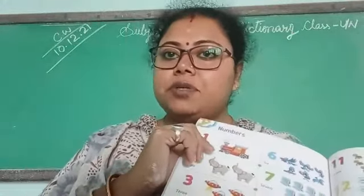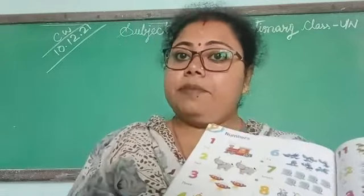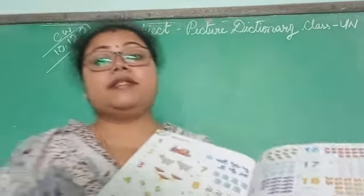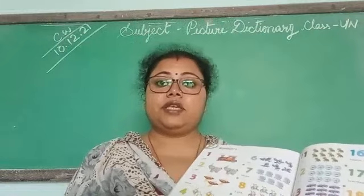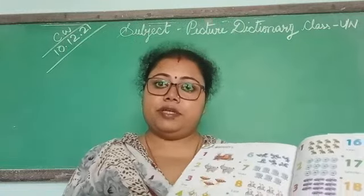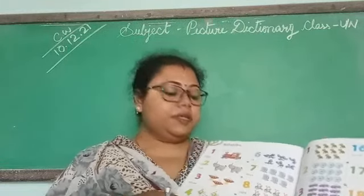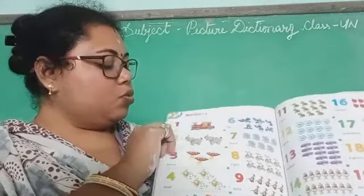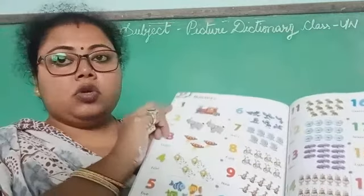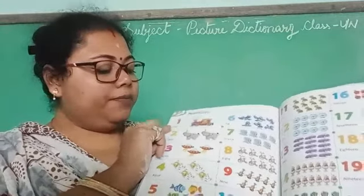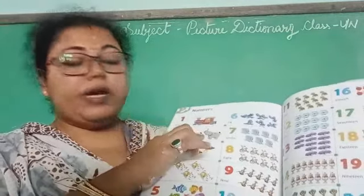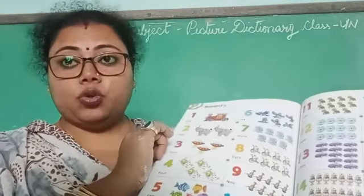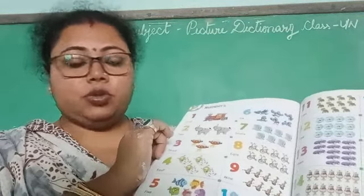You have done numbers in maths, okay? So here also, by seeing the things you have to say which number it is. Now see here — one engine, so one, O-N-E, 1. Now two elephants, T-W-O, 2.